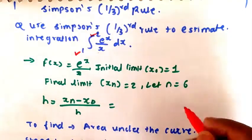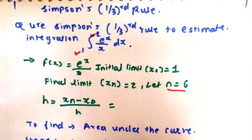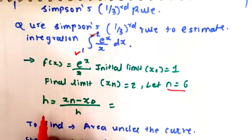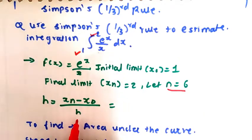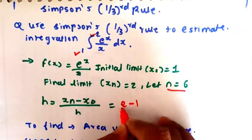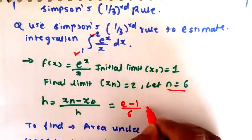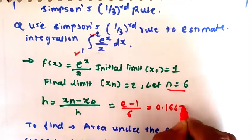Let n equal to 6 — that is the number of iterations we have considered. We have to find out the step size. The step size formula is xn minus x0 divided by n, so it will be equal to 2 minus 1 divided by 6, which is equal to 0.1667.